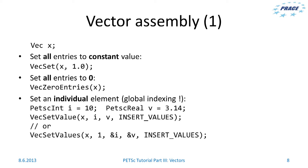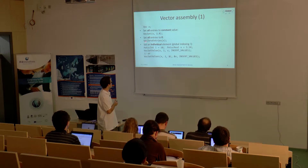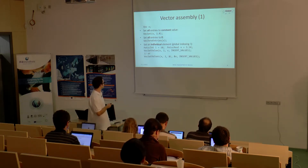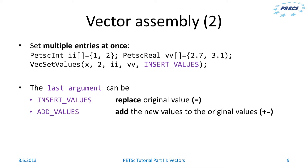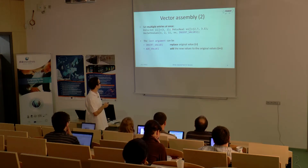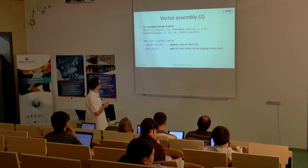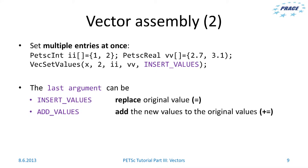Let's say you have vector x. You can set all entries to a constant value using VecSet, or set all entries to 0 using VecZeroEntries, or you can set individual elements with global indexing using VecSetValue. It is sometimes more efficient to set multiple entries at once — you specify your indices and values arrays of the same size and then call VecSetValues. The last argument can be INSERT_VALUES, which replaces the original value, or ADD_VALUES, which adds the new values to the original values.